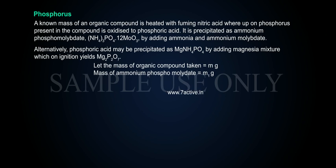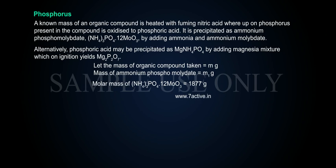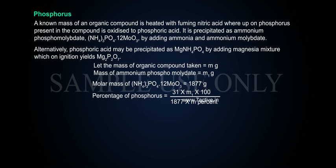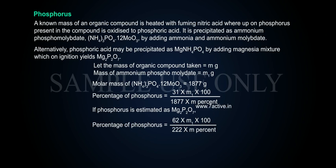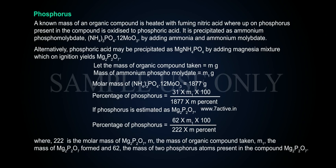Let the mass of organic compound taken equal M grams, and mass of ammonium phosphomolybdate equal M1 grams. Molar mass of (NH4)3PO4·12MoO3 = 1877 g. Percentage of phosphorus = (31 × M1 × 100) / (1877 × M) %. If phosphorus is estimated as Mg2P2O7: percentage of phosphorus = (62 × M1 × 100) / (222 × M) %, where 222 is the molar mass of Mg2P2O7.